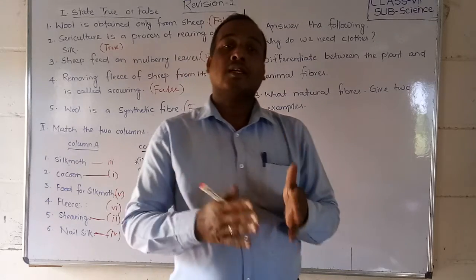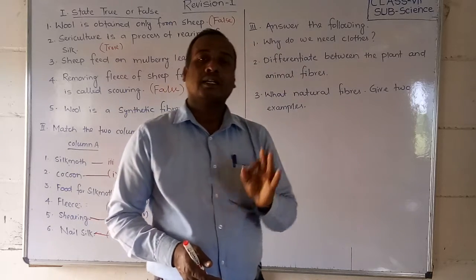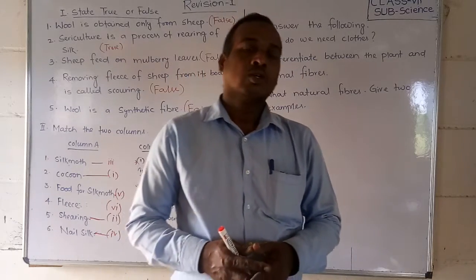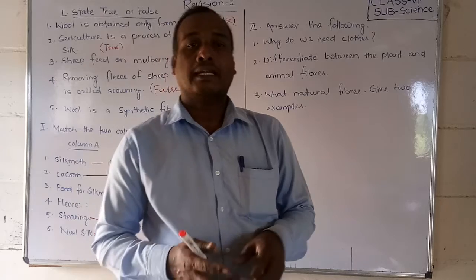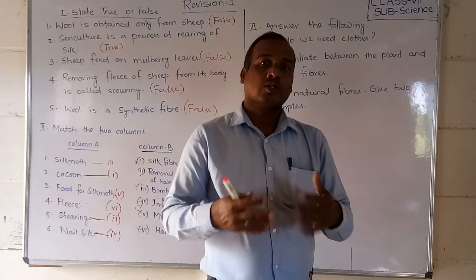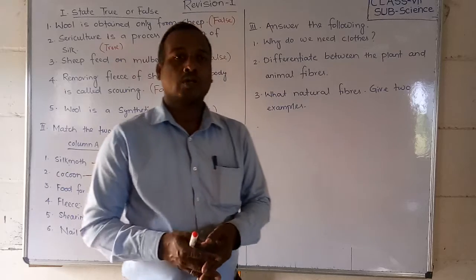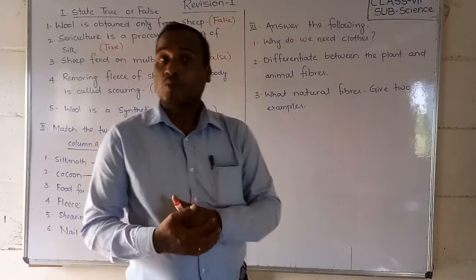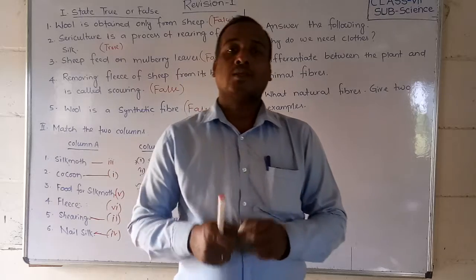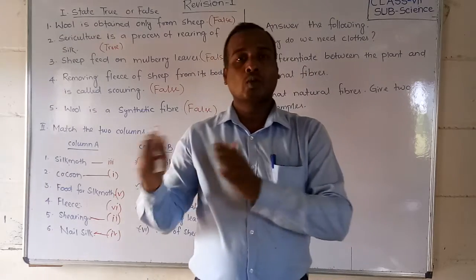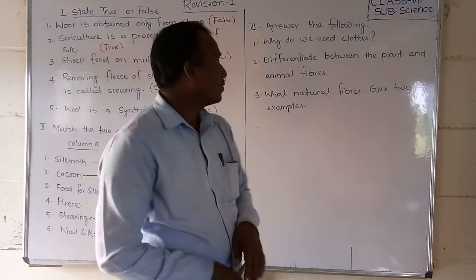In the second class we study what very important things we need. We already know that food, clothes, and house are basic needs. Clothes are very important for us. Clothes protect us from cold, heat, and rain — they give us warmth, protect our body, and also protect us from insects. So clothes are very important for us.